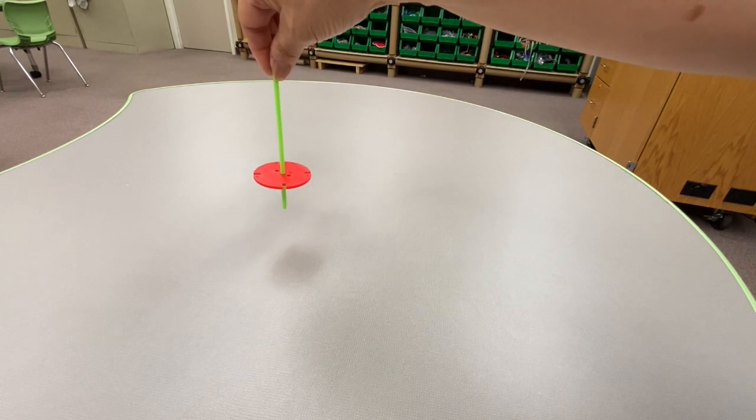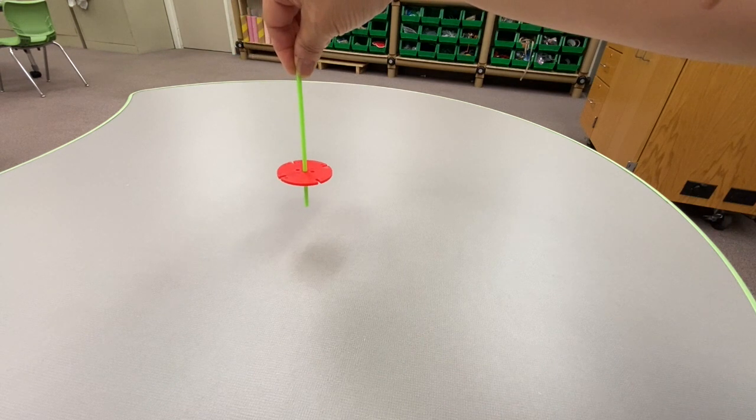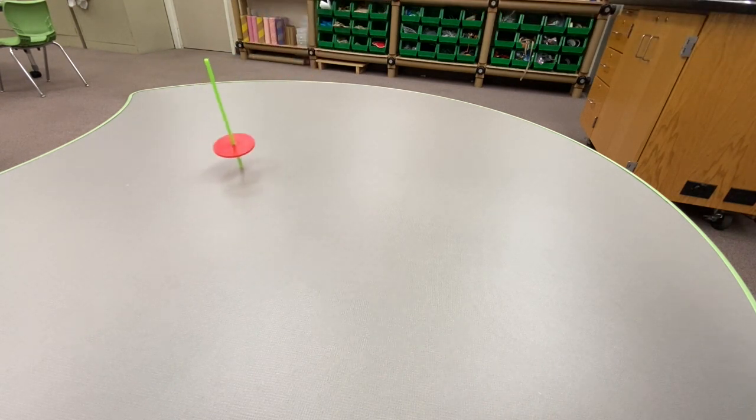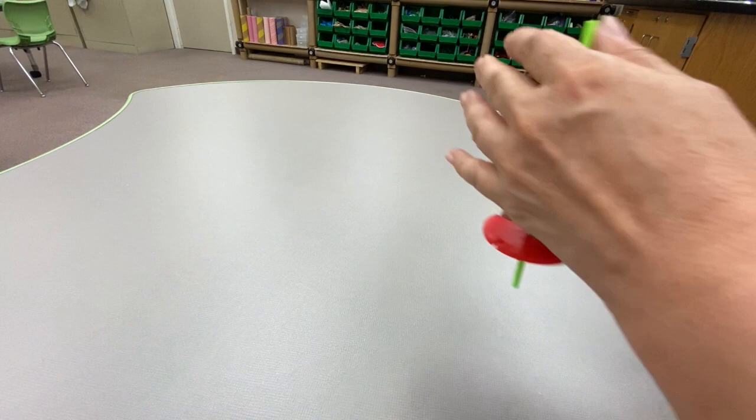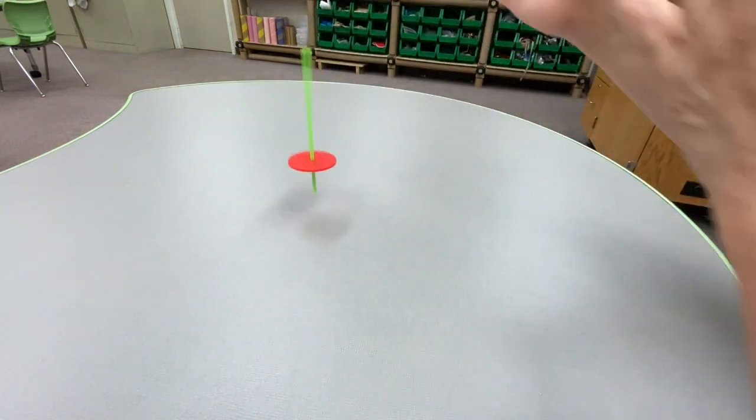So how do we get our top to start moving? One way is to put it between your thumb and pointer finger and just give it a twirl. Another way is to put it between your palms and rub them together.